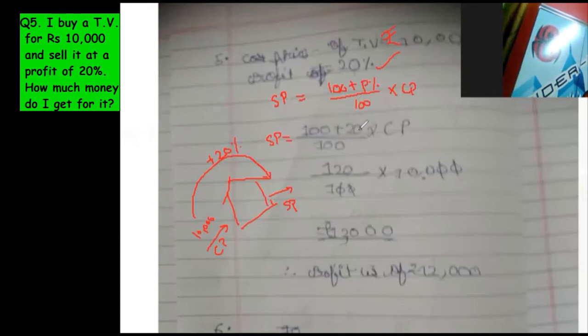Now, 100 plus profit percent. Profit percent was 20. So 120 upon 100 into 10,000. The zeros get cancelled. So 12,000 rupees is the selling price. Not profit. This is selling price: 12,000.